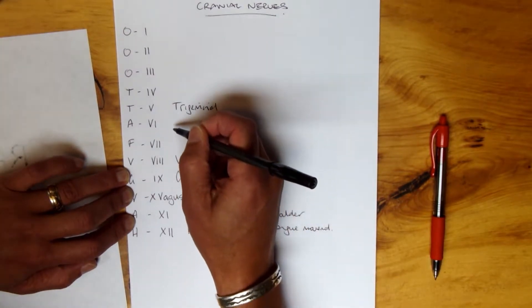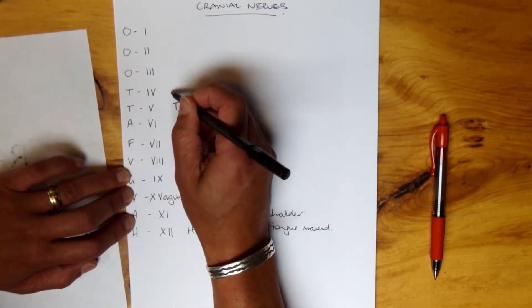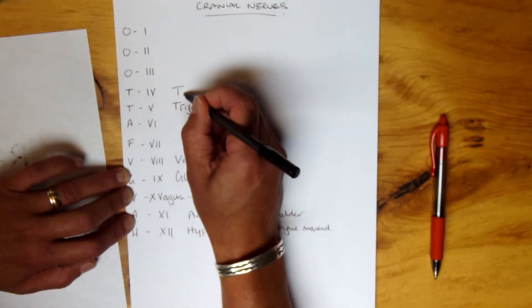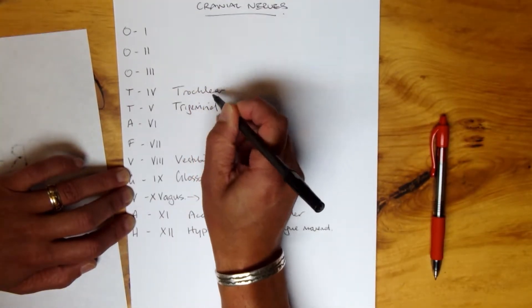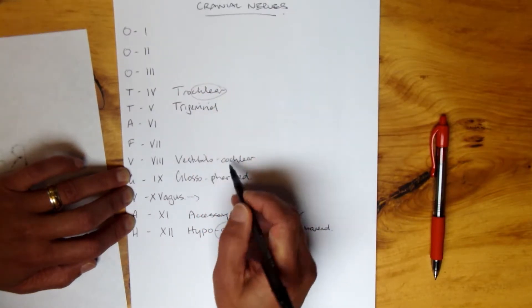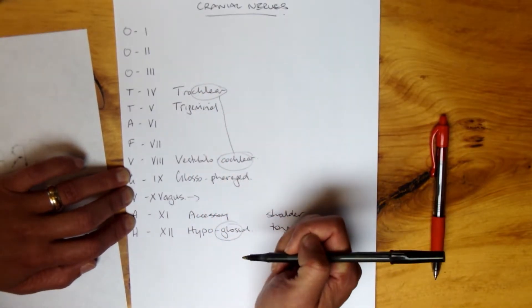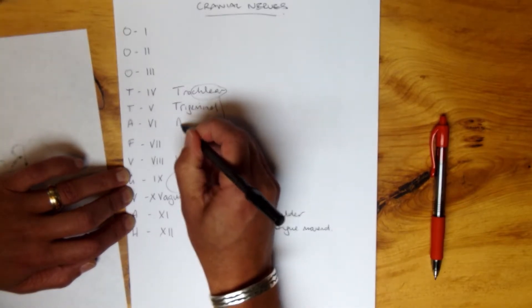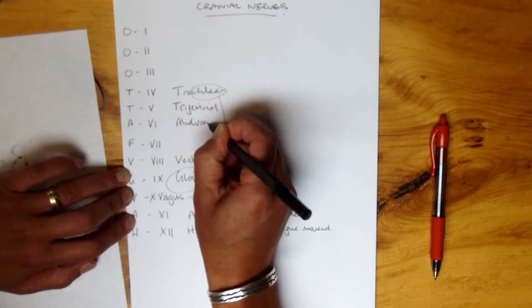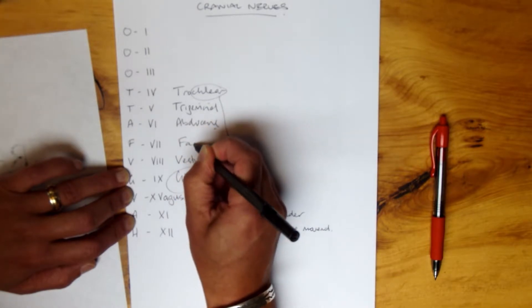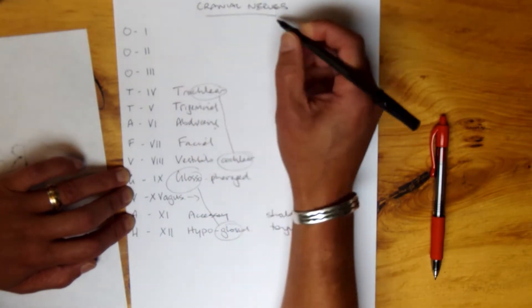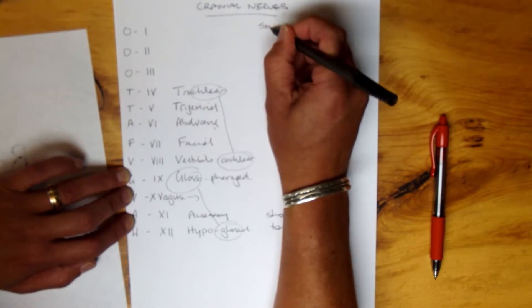And you can come up here to four because T is tricky. Don't get these confused: trigeminal, think of trochlear. Trochlear, cochlear, you can join those two together if you like. Abducens and facial.